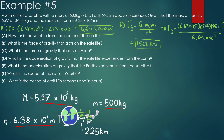Part c asks for the force of gravity acting on the Earth. The Earth is pulling on the satellite, but the satellite is also pulling on the Earth. By Newton's third law, this force of gravity is exactly the same — both b and c are 4563 newtons, just in opposite directions.